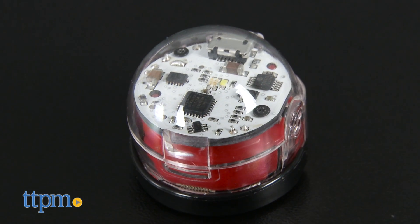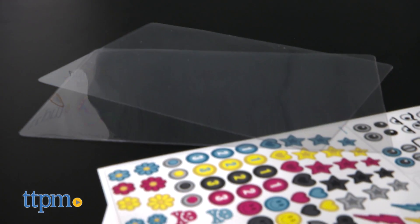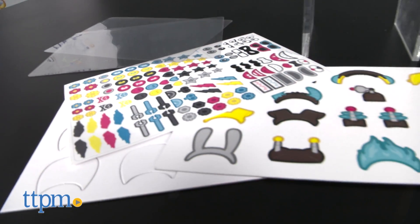Where do I begin with the Ozobot? This smaller than a golf ball robot lets kids get their feet wet in robotics without even knowing they're learning.